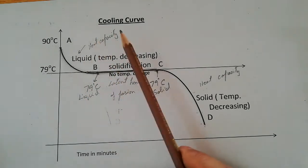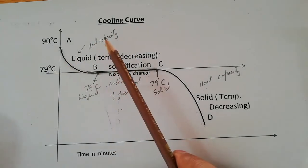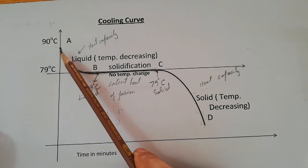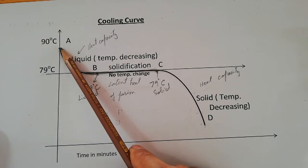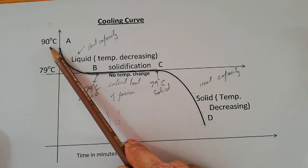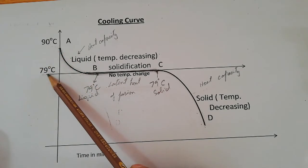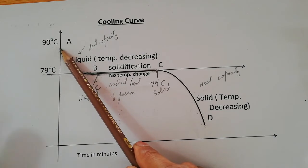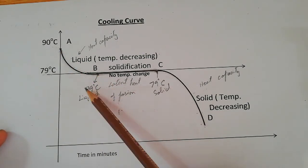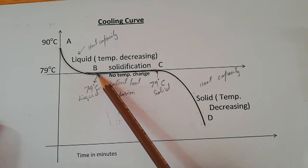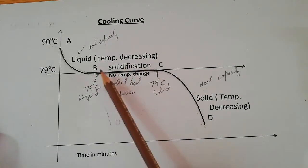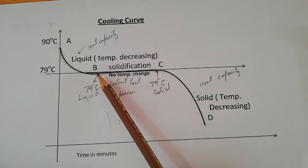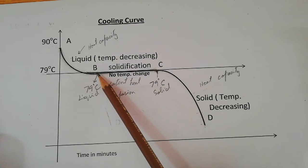Now for the cooling curve, let us take the example of naphthalene, which is initially at 90 degrees Celsius. Its temperature is decreasing from 90 degrees Celsius to 79 degrees Celsius. At 90 degrees Celsius, naphthalene is liquid, and at 79 degrees Celsius it starts solidification, because 79 degrees Celsius is the melting point or freezing point of naphthalene.